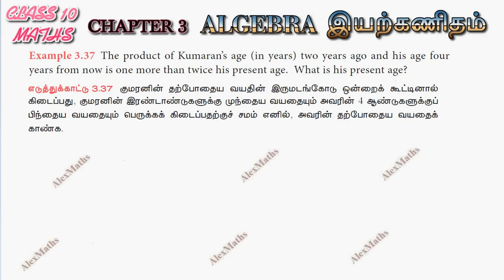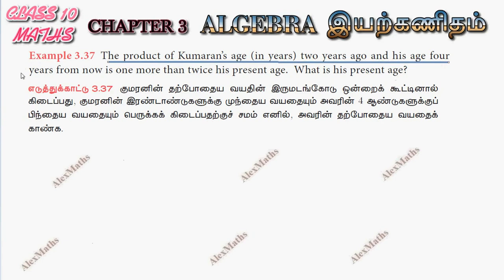Hi students, this is Alex here. Example 3.37. The product of Kumaran's age in years 2 years ago and his age 4 years hence is 1 more than twice his present age.